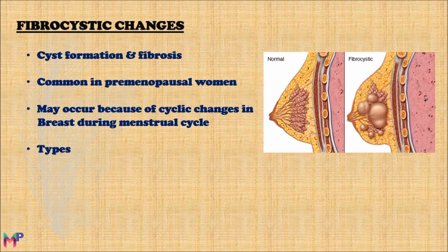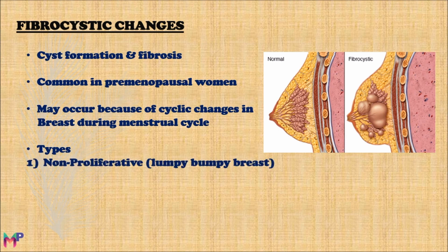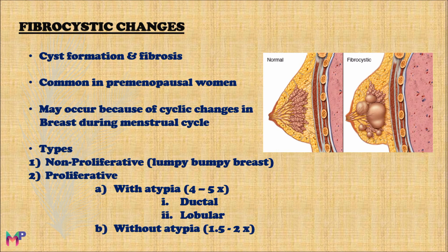According to the risk of developing breast cancer, the benign epithelium is divided into two types: the non-proliferative type and the proliferative type. The non-proliferative type is not associated with breast cancer development, while the proliferative type is associated with increased risk. The proliferative type is further divided into proliferative with atypia, which carries a four to five times increased risk of breast cancer, and proliferative without atypia, which carries a 1.5 to 2 times increased risk.